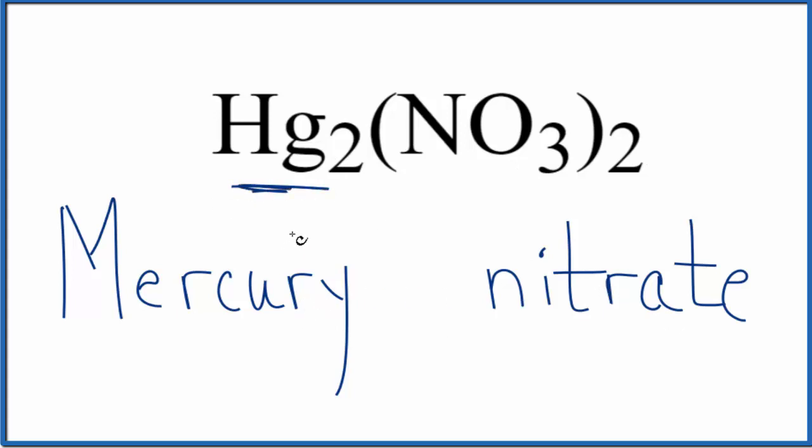But mercury, that's a transition metal. So we need to write a Roman numeral here to show the charge on the mercury. Nitrate, that's always going to be one minus. Two times one minus is two minus. So we need a two plus over here in order for this to have a net charge of zero.